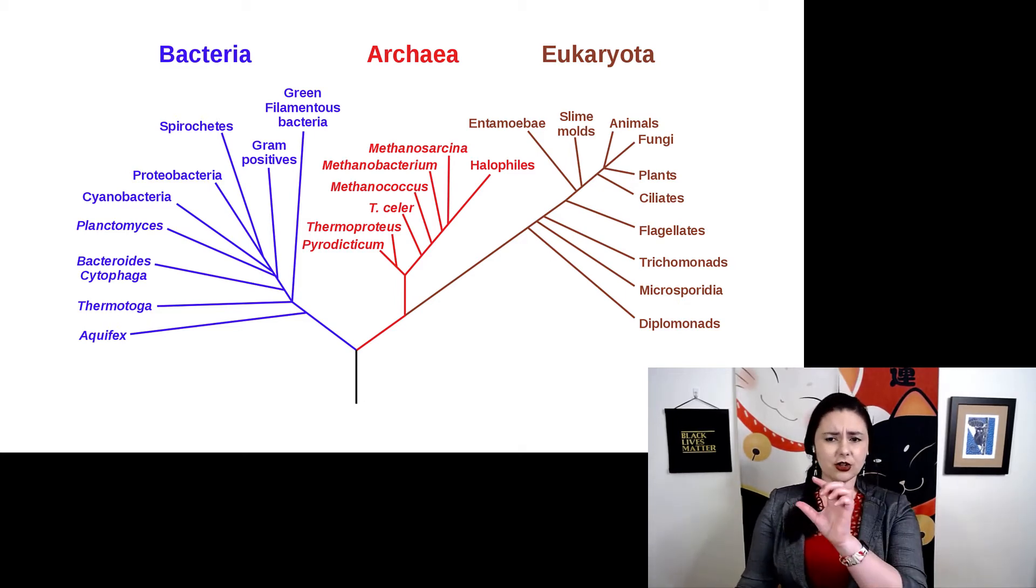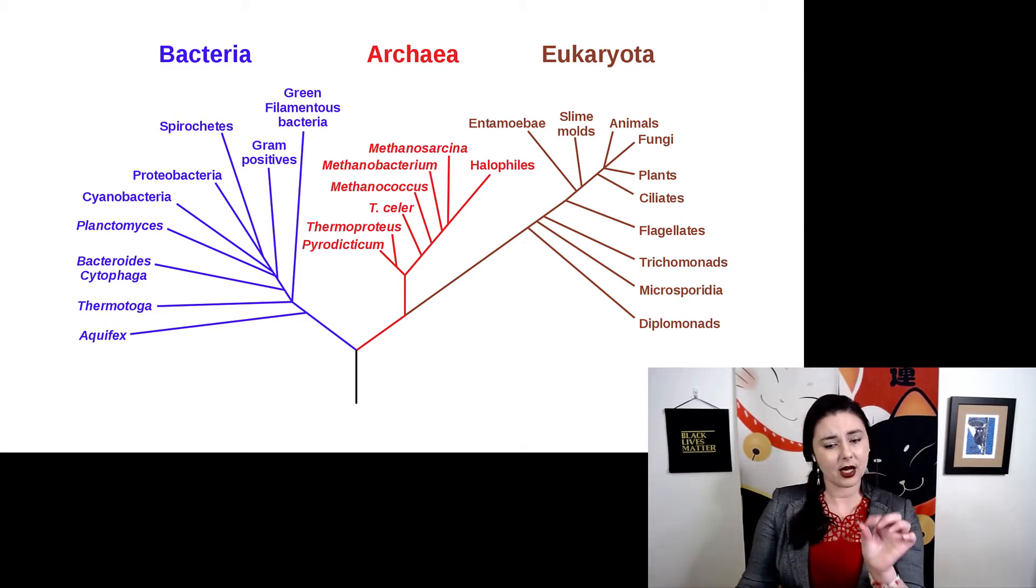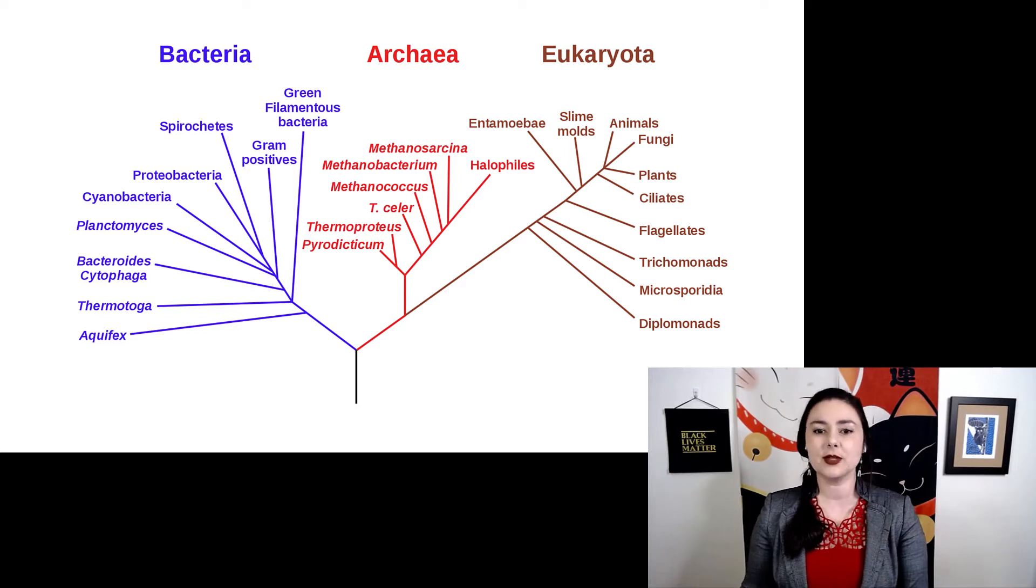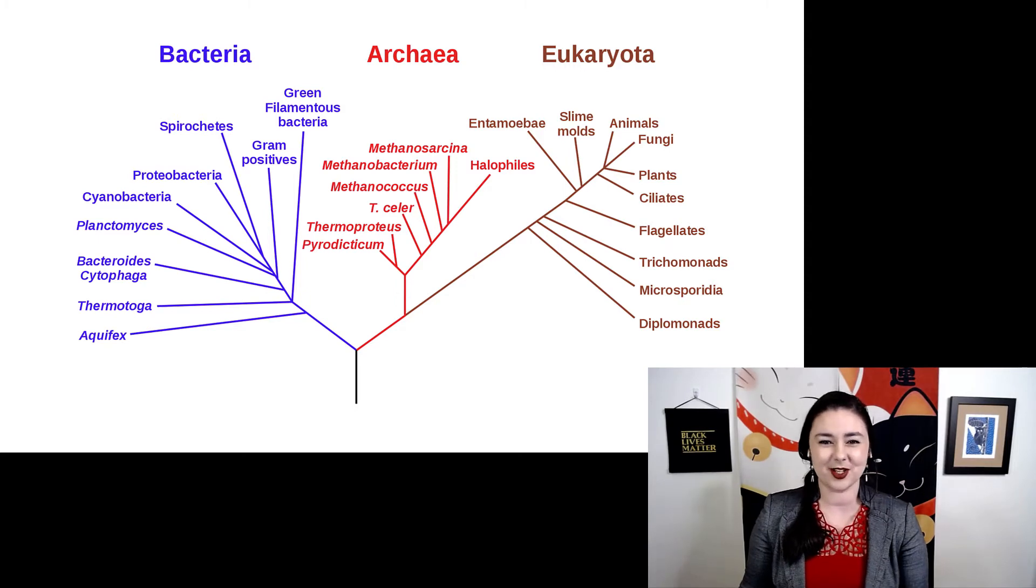What you can see here is notice that eukaryota and archaea come together with each other to the exclusion of bacteria. This means that both archaeans and eukaryota are more closely related to each other than either of them is to bacteria. So bacteria are not as similar to other forms of life.